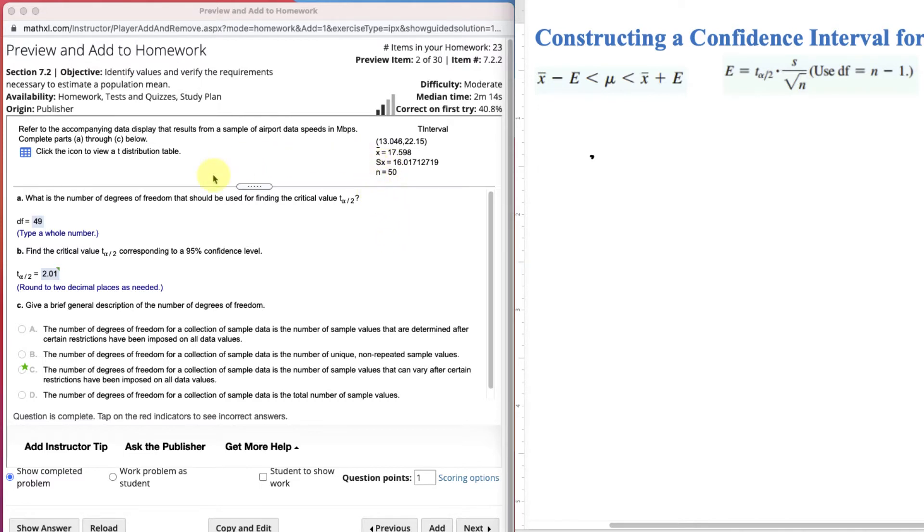Step one is to say, does it come from a normally distributed population? And we can't tell that. It doesn't say anything about normal distribution. It just says here it is. But it does give me the second portion that we require where n is greater than 30. And that's check, n is equal to 50.